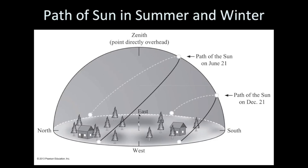Every other day of the year, the Sun's path will be somewhere between the summer solstice path and the winter solstice path. On either of the equinoxes — fall or spring — the Sun will rise directly east, go up and to the right, get high in the southern sky, and then set directly in the west. On those days, the Sun will spend exactly 12 hours above the horizon. For a person in the continental U.S., the Sun will never get directly overhead.